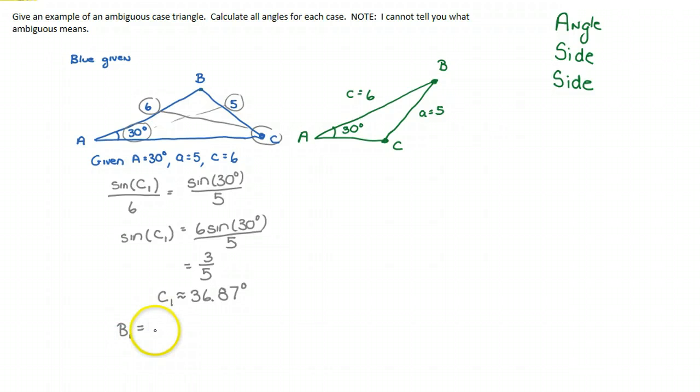Well, if A is always 30 degrees and in this case C₁ is 36.87, I can then calculate B. B₁ equals 180° minus 36.87 minus 30°.